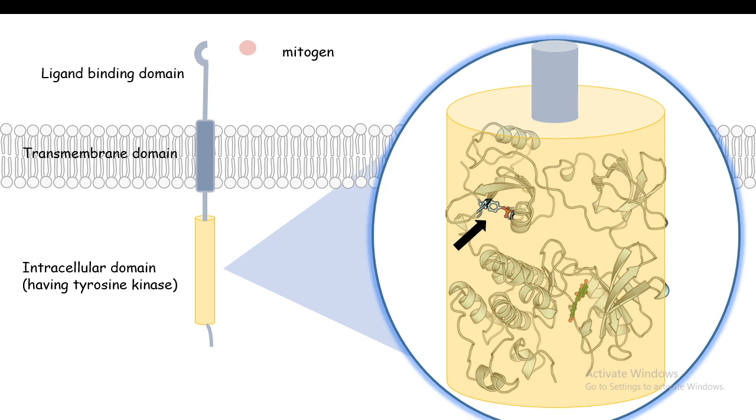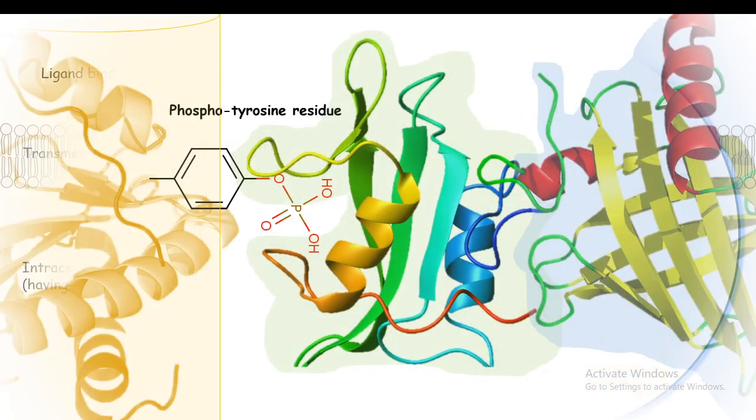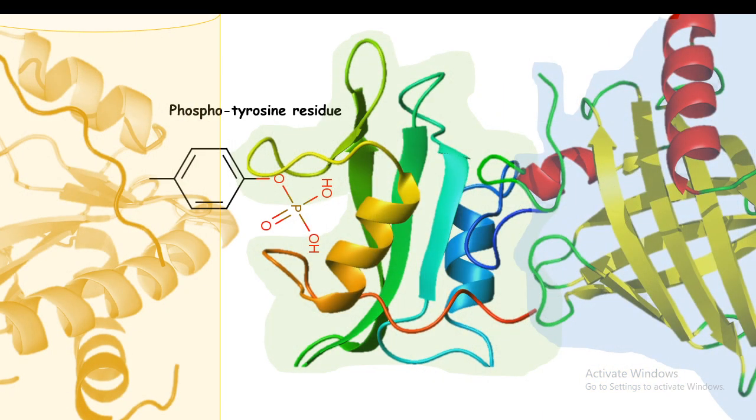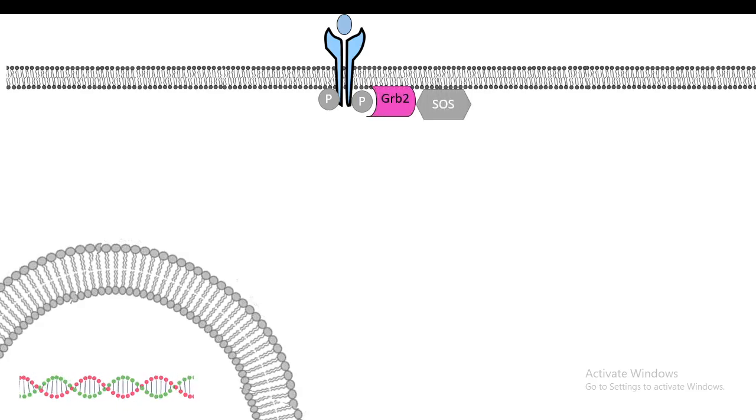Upon ligand binding, the tyrosine kinase domain phosphorylates itself and several SH2 domain-containing proteins bind to the phosphotyrosine residue. One such SH2 domain-containing protein is GRB2, which is the initiator in case of the Ras MAP kinase signaling pathway. Another protein called SOS binds to GRB2, which is a guanosine nucleotide exchange factor (GEF). GEF helps in the activation of Ras.